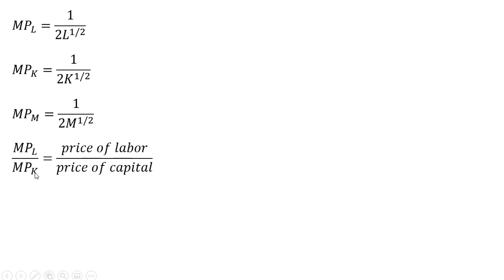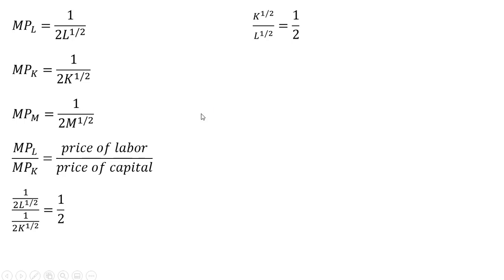Now we're going to take the marginal product of labor divided by the marginal product of capital, which is the marginal rate of technical substitution of labor for capital, and set that equal to the ratio of input prices — the price of labor to the price of capital. Plugging in the marginal products and the prices (w=1, r=2), the twos cancel. Multiplying numerator and denominator by K to the one-half, and then cross-multiplying, we get K to the one-half equals L to the one-half divided by two.